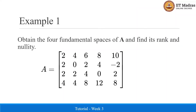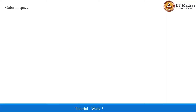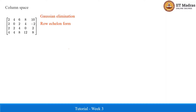Given a matrix A, we have to find the four fundamental subspaces and the rank and nullity of A. First let us find the column space of A. To do that, we have to identify those columns which are linearly independent, which can be achieved by reducing the matrix to its row echelon form using Gaussian elimination.